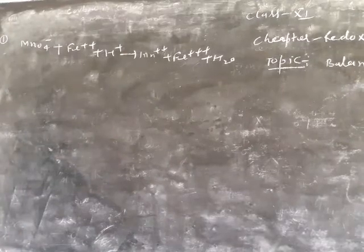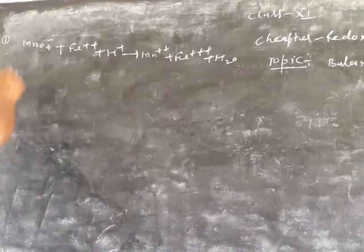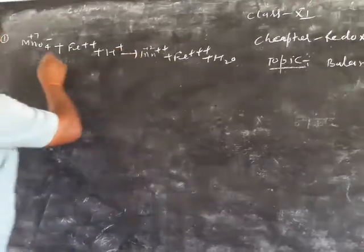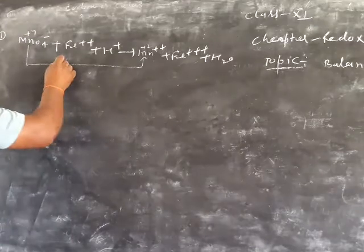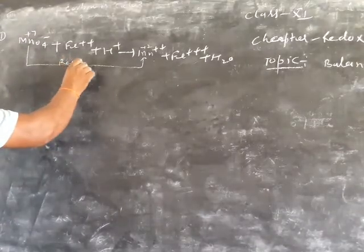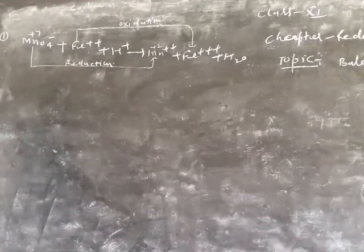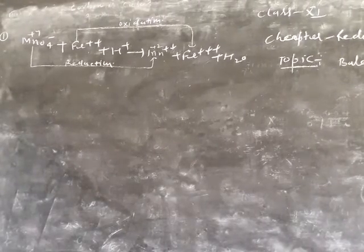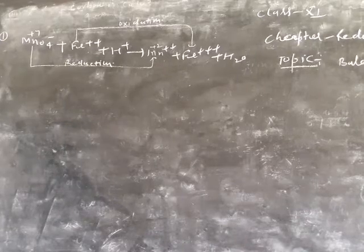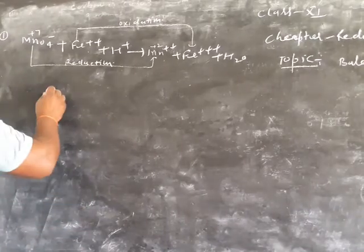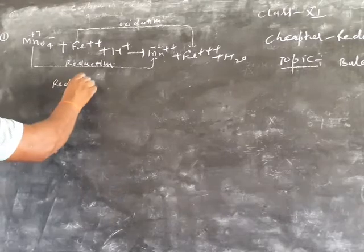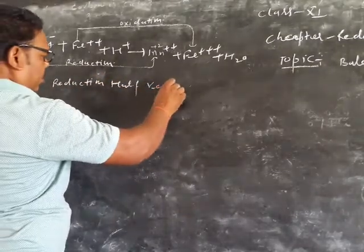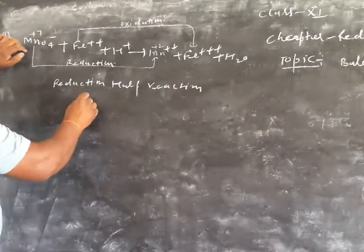First, determine the oxidation and reduction reactions. Manganese goes from Mn7+ to Mn2+, that is reduction. Fe2+ goes to Fe3+, that is oxidation. Now, reduction half reaction: